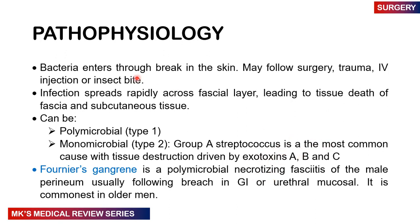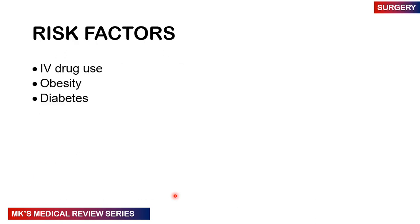A severe variant is Fournier's gangrene — a polymicrobial necrotizing fasciitis affecting the male perineum, usually arising from a breach in the GI or urethral mucosa. It is more common in older men and those with immunosuppression. Risk factors for necrotizing fasciitis include IV drug use, obesity, diabetes, and immunosuppression.